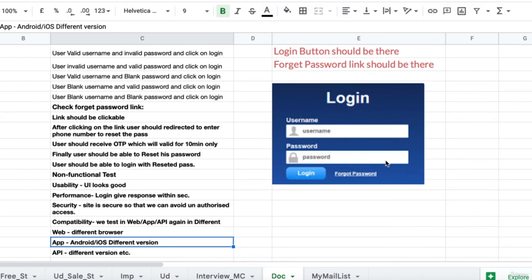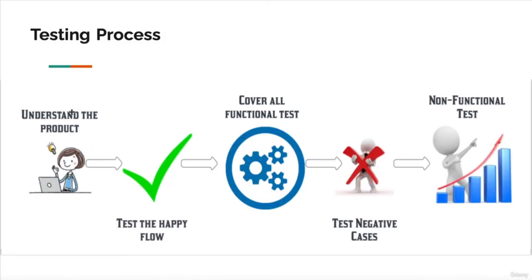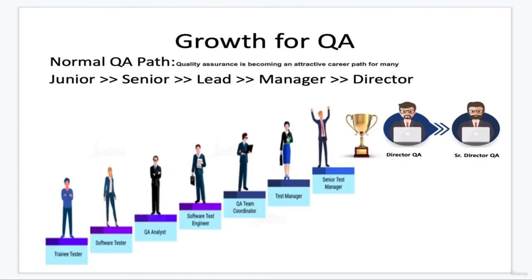At a high level, what a software tester does is: understand the requirement or product, test the happy flow, cover all functionality, test the negative flow, and then go for non-functional testing. That's a pretty complete high-level overview of how software testing is done.